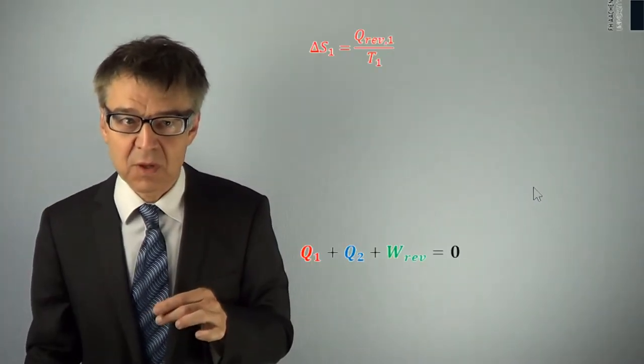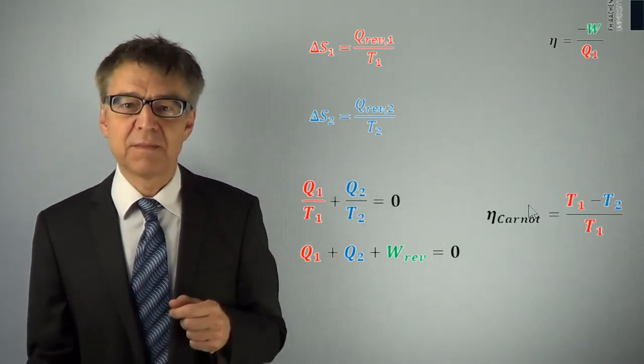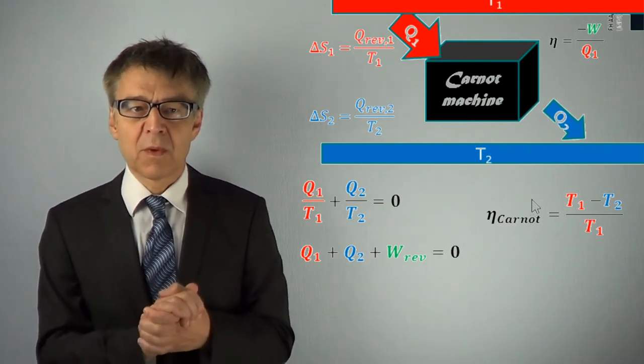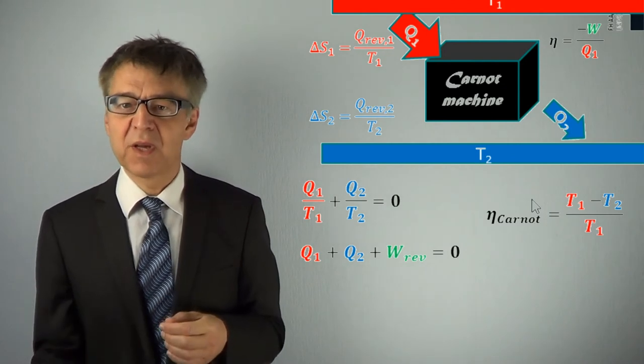We now return to our Carnot engine and consider the same cycle through entropy glasses. Where does entropy change in this cycle? The first law is still valid and is not affected by the following considerations. We will consider the process entropically.